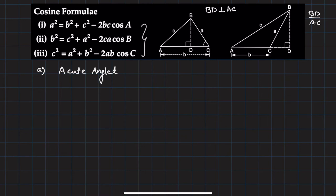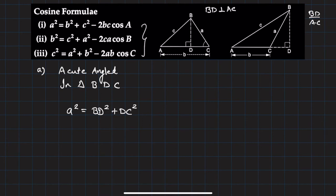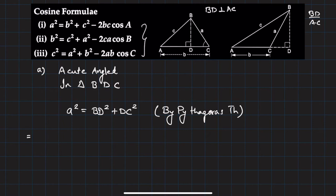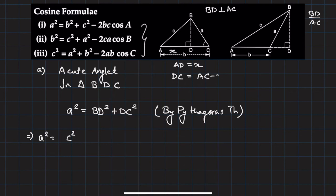Let's take up the acute-angled case first. We want to prove a² = b² + c² - 2bc·cosA. Considering triangle BDC, by Pythagoras theorem: a² = BD² + DC². Let's say AD = x, so DC = AC - x = b - x. We can write a² = BD² + DC².